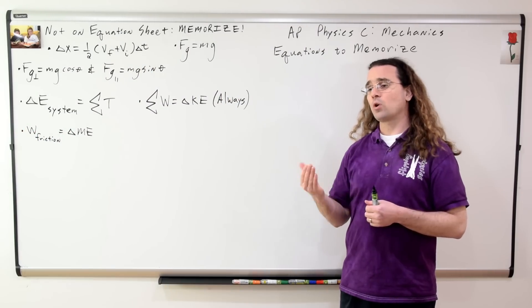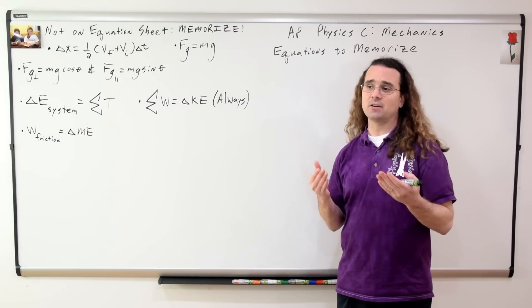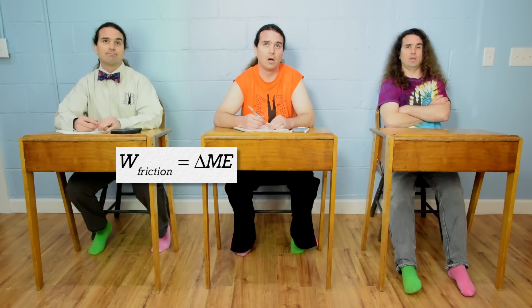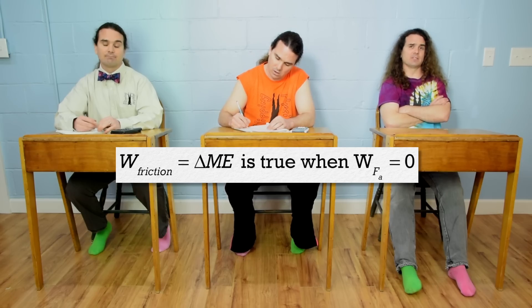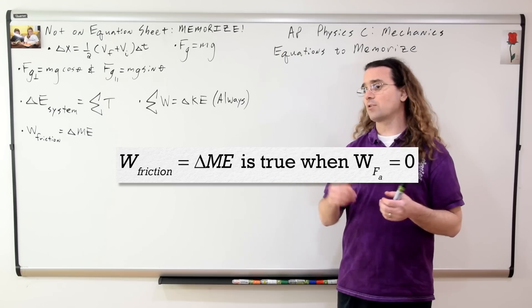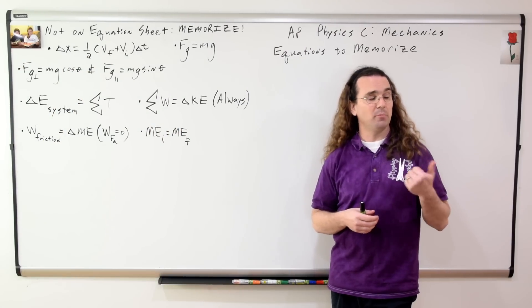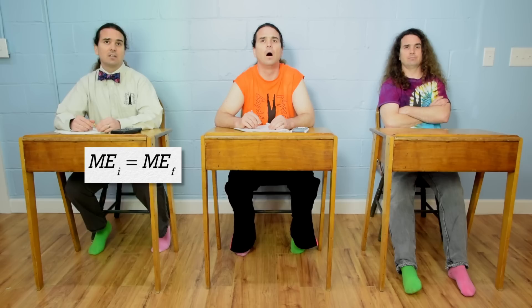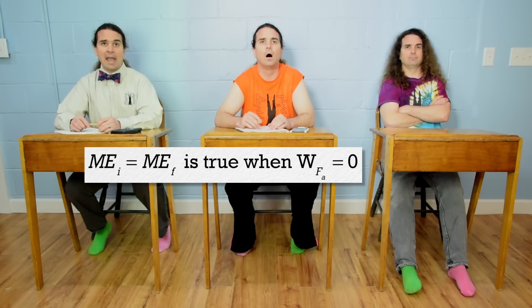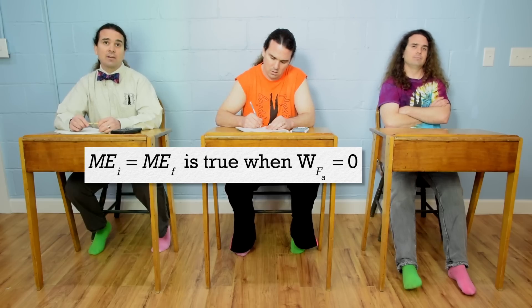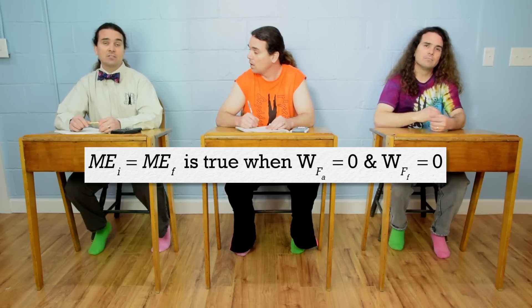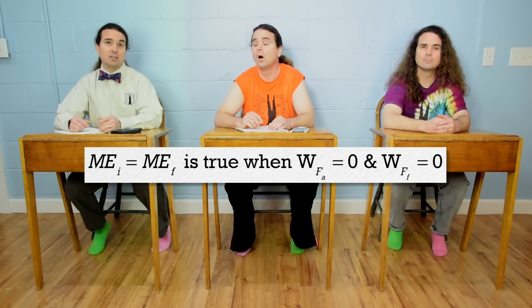Bo, when can we use the work done by friction equals change in mechanical energy equation? That equation is true when there is no work added to or removed from the system by a force. Also correct. Conservation of mechanical energy. Billy, when is this equation valid? Conservation of mechanical energy requires that there be no work added to or removed from the system by a force, and it also requires no work be done by a non-conservative force, which is basically friction. Very nice.